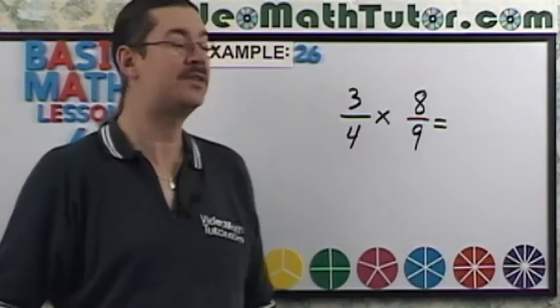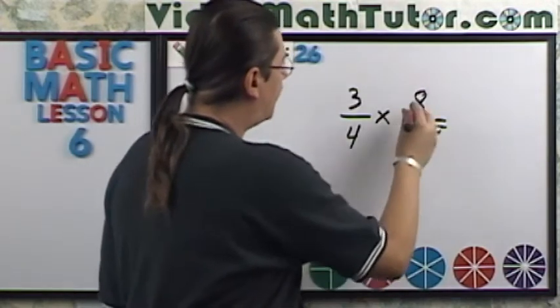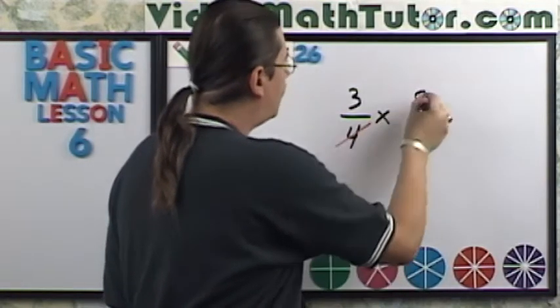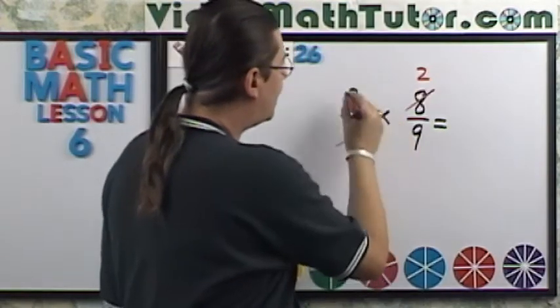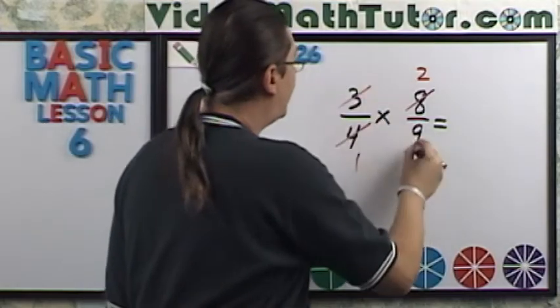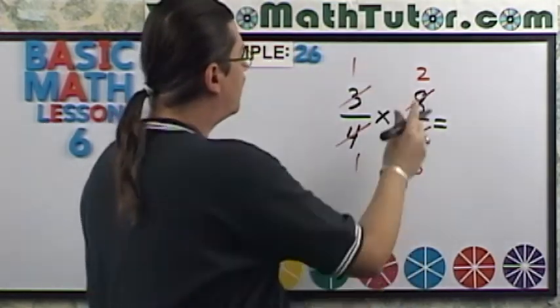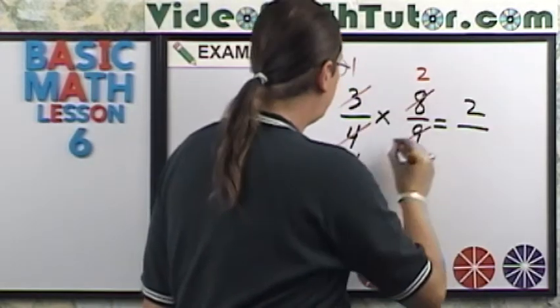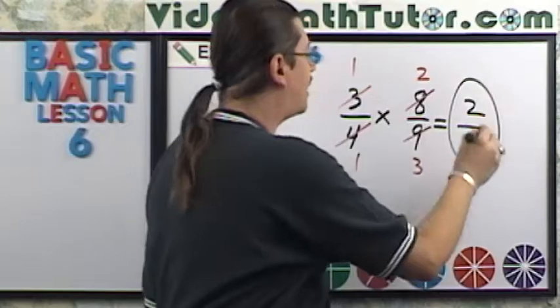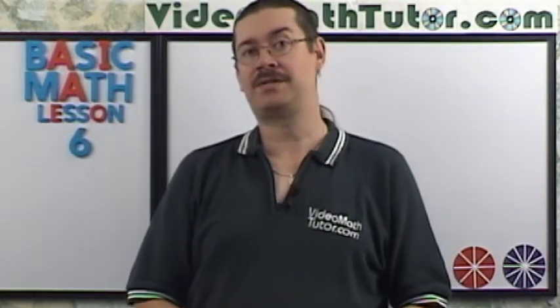Now another thing we can do is actually cancel out common factors. So you have an eight and a four here. Well, there's a four in each. I have one and I'm going to have two up there. Here's threes and nine. We have threes in common. So I can zap out threes. I have one and three. Now I just multiply the red numbers together. One times two is two. One times three is three. And there's our answer. Notice how much easier that was to do.